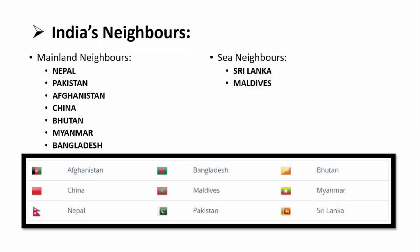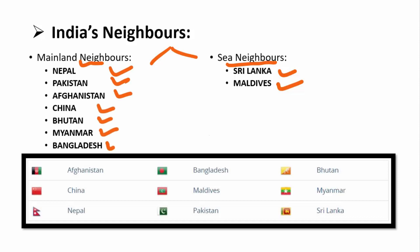Let's talk about India's neighboring countries. We are going to discuss 9 neighboring countries, broadly classified in two categories. First, mainland neighbors, which are countries we share land and international borders with. Then we have sea neighbors — Sri Lanka and Maldives. The land neighbors are Nepal, Pakistan, Afghanistan, China, Bhutan, Myanmar, and Bangladesh. Let's talk about these 9 countries and their relations with India.